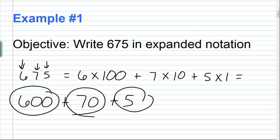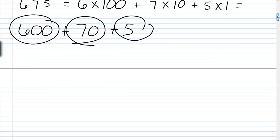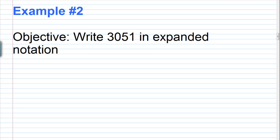Let's take a look at another example. For example 2, our objective is to write 3051 in expanded notation. Let's write our number 3051 — we're going to start with the leftmost digit and that's the 3. We're going to multiply that by its corresponding place value. The 3 is in the thousands place, so we're going to have 3 times 1000.